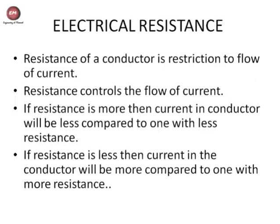If resistance is less, the current in the conductor will be more compared to one with more resistance. For example, you have two conductors — conductor A and conductor B — and the resistance of conductor A is less than that of conductor B. Then the current which can flow through conductor A will be more compared to conductor B.